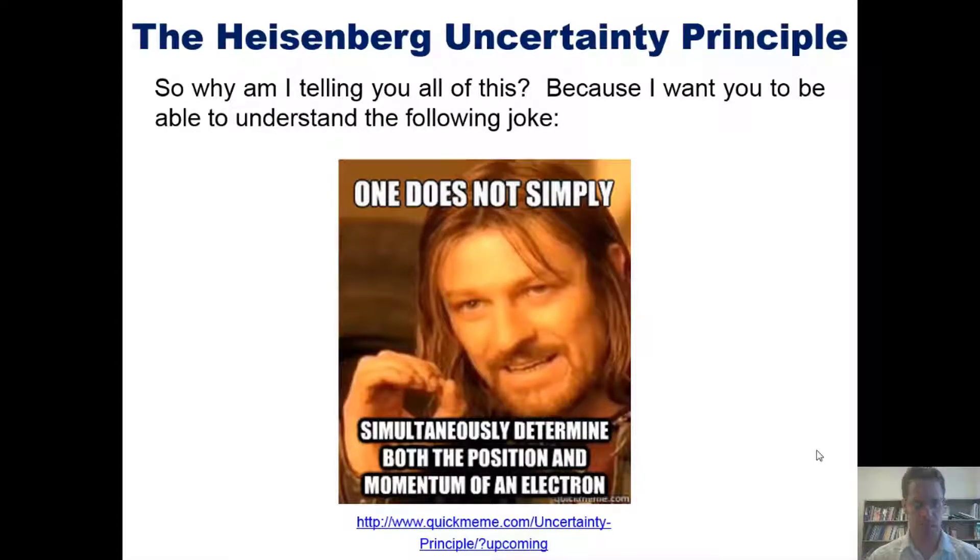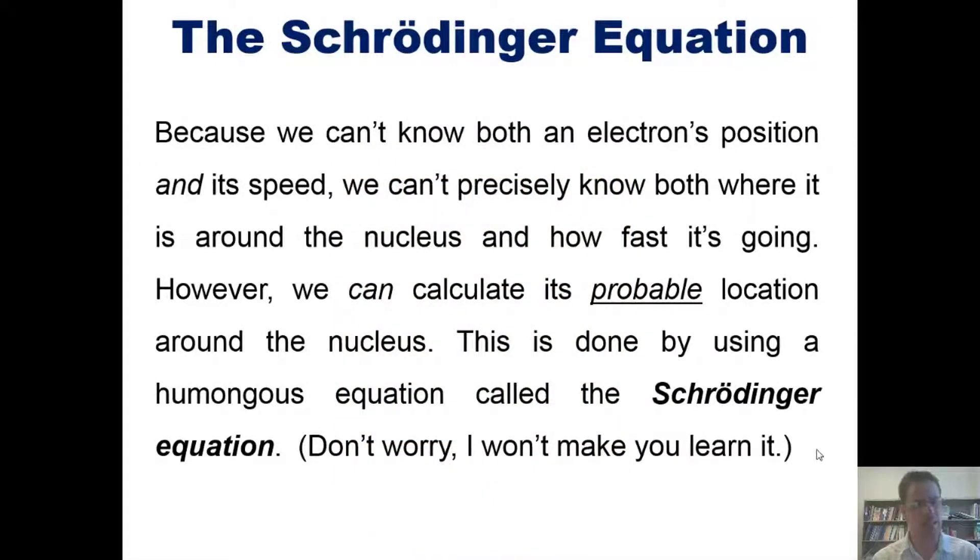Now back to business. So because we can't know with absolute accuracy both an electron's position and its velocity or speed, we can't precisely know where it is around the nucleus and how fast it's going.